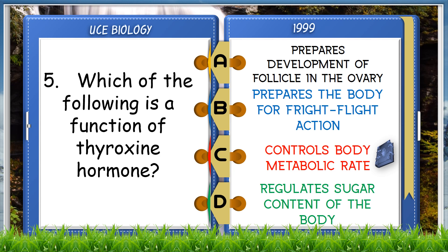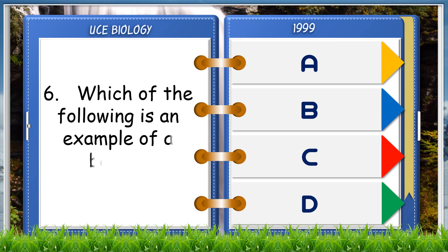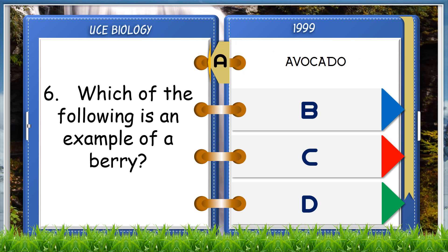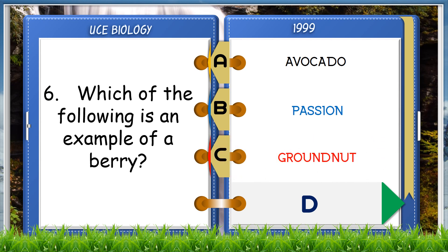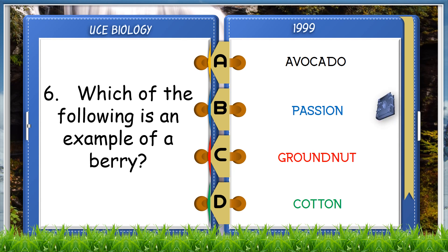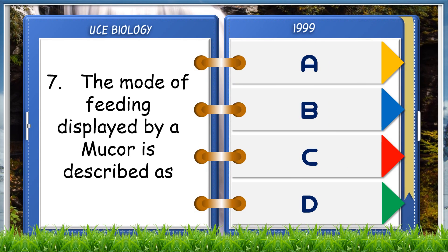Which of the following is an example of a berry? A. Avocado, B. Passion, C. Groundnut, D. Cotton. The answer is B, passion. The mode of feeding displayed by a mucor is described as: A. Holozoic, B. Filter feeding, C. Parasitic, D. Saprophytic.